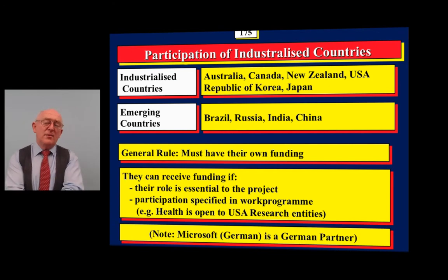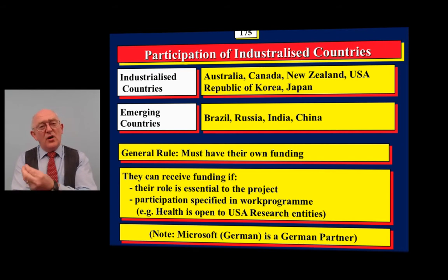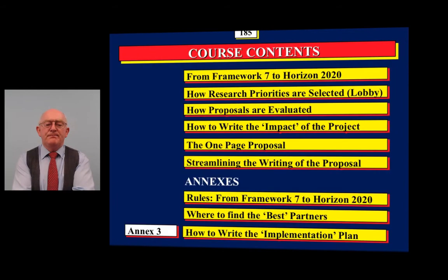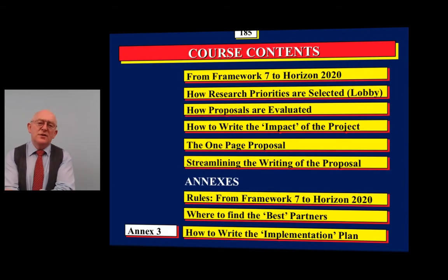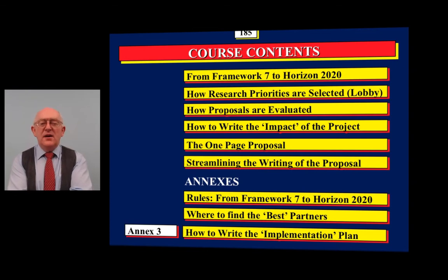In the case of Microsoft Germany, which is based in Aachen, they are classified as a German partner. Intel Ireland, based in Ireland, is classified as an Irish partner. So if you have an international company or research center based in a member state or associated state, they are classified as a European partner and participate like any other university in Europe. The exact rules are defined in the Rules of Participation and in Annex A of the general annexes, which you'll find on the participant portal.